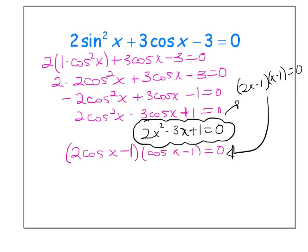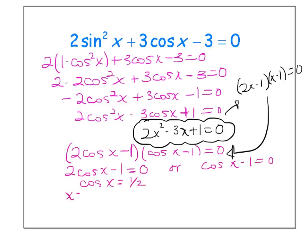Applying the zero product property, I set each factor equal to zero separately. Two times cosine x minus one equals zero, or cosine x minus one equals zero. For the first equation, cosine x equals one half, which happens at pi over three and at five pi over three. For the second, cosine x equals one, which happens only at zero.